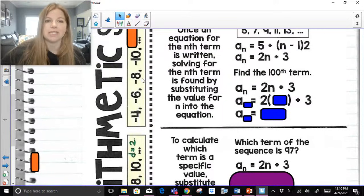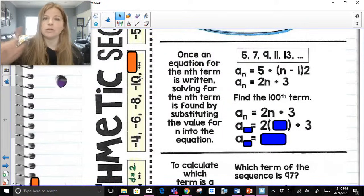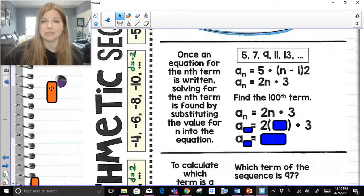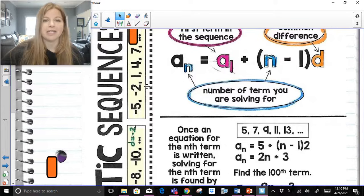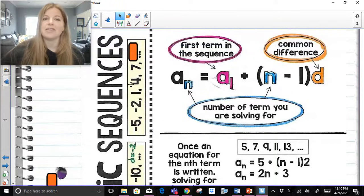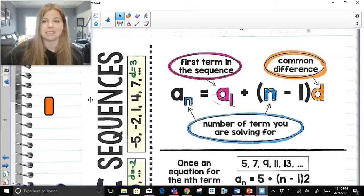Here, negative 4, negative 6, negative 8, negative 10. Those values are decreasing by 2, so I would say the common difference, d, is a negative 2. Negative 5, negative 2, 1, 4, 7, that's increasing by 3, so I would say the common difference is 3.